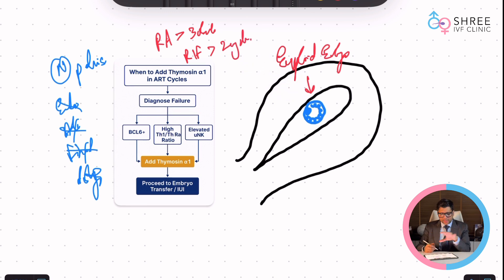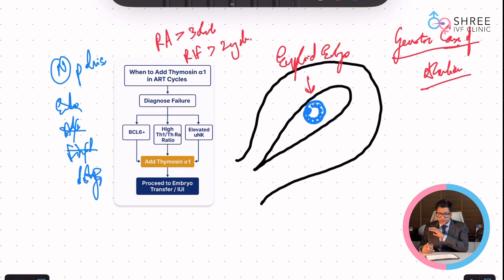One more thing, you cannot add Thymosin or any other immunomodulation if there is a genetic cause of abortions. That means if there is a reason why there is a genetic issue which has caused an abortion, you cannot add this drug.